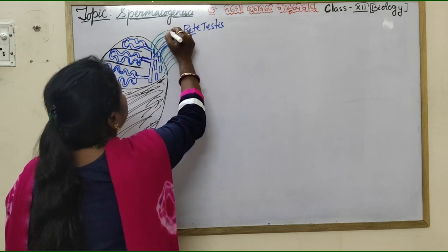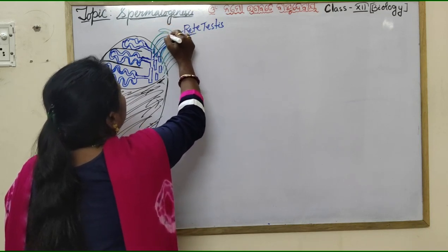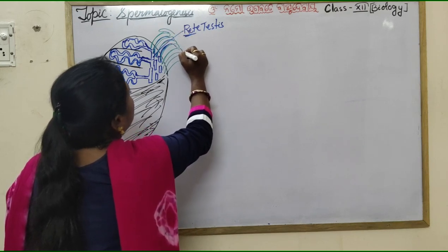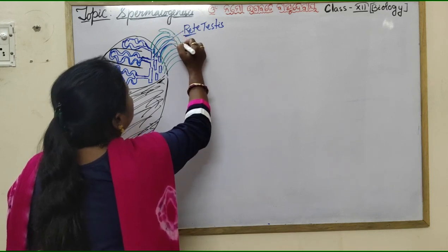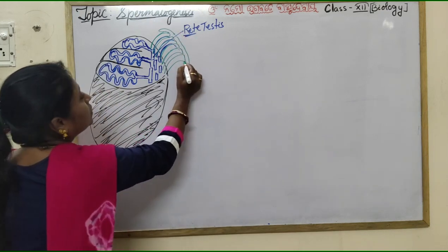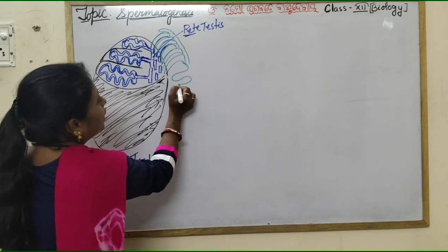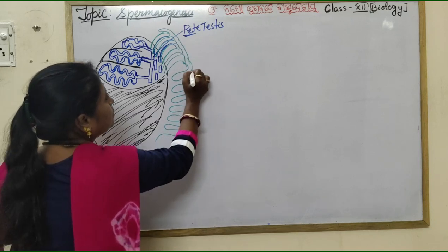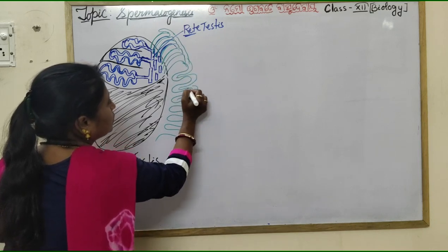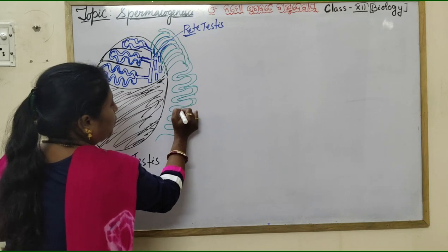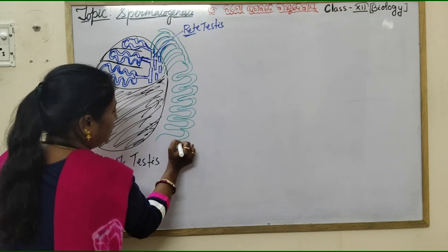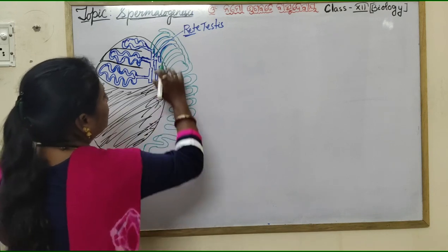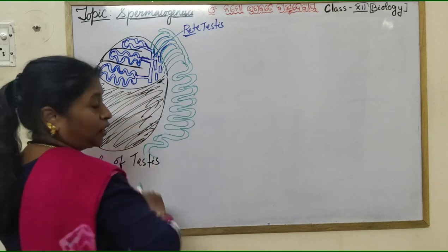Around 15 to 20 vasa efferentia arise, and they anastomose or combine to form a single muscular duct called the epididymis, which is about 6 meters in length, present in a coiled manner posterior to the testis.